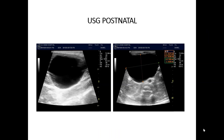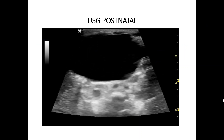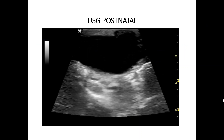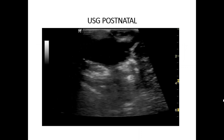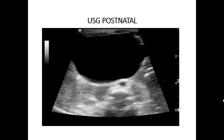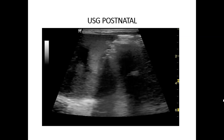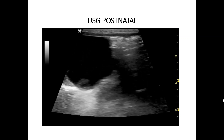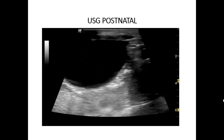These are the images of the postnatal ultrasound of the baby showing a well-defined anechoic cystic lesion noted in the fetal abdomen, as mentioned on the antenatal ultrasound. This is the video of the postnatal ultrasound showing the cystic lesion in the fetal abdomen, which is separate from the kidney and other major abdominal organs.